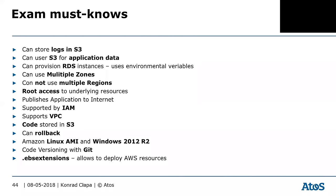Exam tips for Elastic Beanstalk: you can store your logs in S3; use S3 for keeping your application data; provision RDS instances and use environment variables so your application knows where to connect. You can use multiple zones but NOT multiple regions out of the box. Root access to underlying resources is available. All your web server applications can be published to the internet.